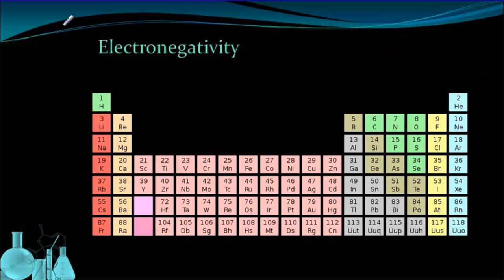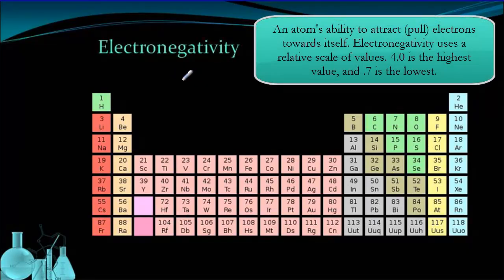The next trend is electronegativity. Electronegativity is an atom's pull on another atom's electrons. So it's really only relevant when we're looking at a compound, when there's two elements or two atoms in a molecule. We want to know how much each atom is pulling on the other atom's electrons.